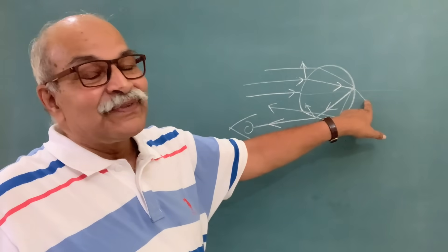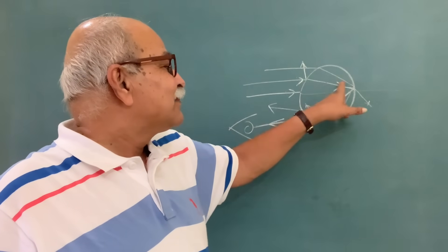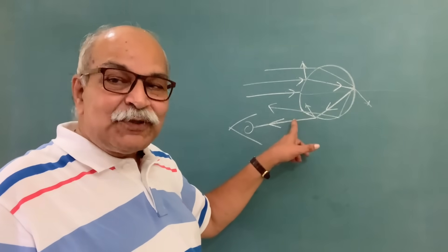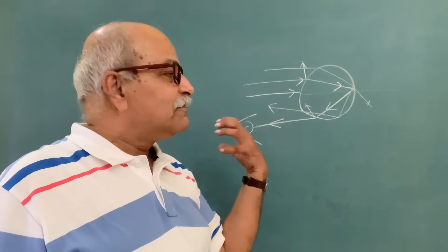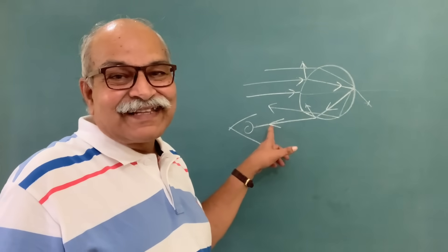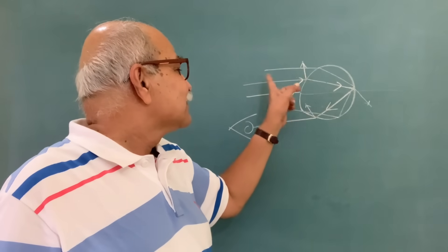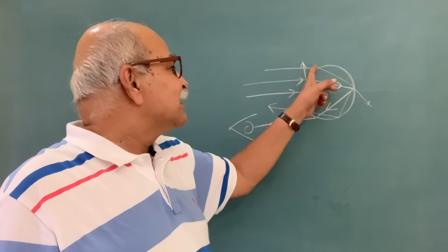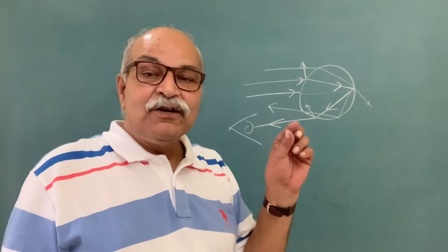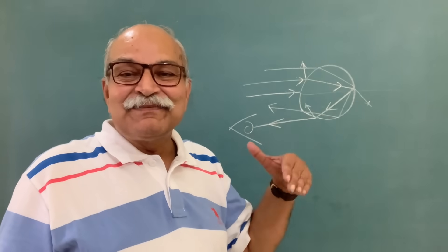Because light is also getting lost at each interface — there is partial reflection and partial transmission at each surface. So the intensity depends on where the light falls on the drop. The intensity is maximum in the range of 40 to 42 degrees — 42 degrees for red and 40 degrees for violet, with the remaining colors in between.